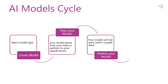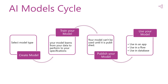The last step is to use your model, and you can use it in three areas: as a component in an app, which will redirect you to the canvas app creation; or as an action in a flow, which will redirect you to the flow template page in Power Automate; or as new data in your database, as some model types write to your database.